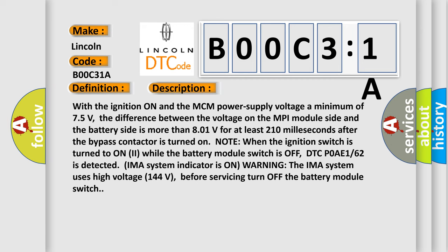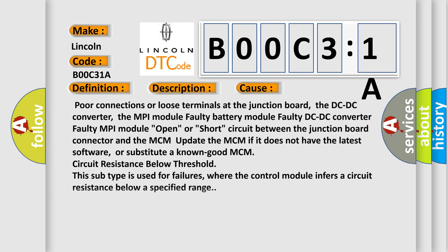This diagnostic error occurs most often in these cases: poor connections or loose terminals at the junction board, the DC-DC converter, the MPI module, faulty battery module, faulty DC-DC converter, faulty MPI module, open or short circuit between the junction board connector and the MCM, update the MCM if it does not have the latest software, or substitute a known good MCM. Circuit resistance below threshold: this subtype is used for failures where the control module infers a circuit resistance below a specified range.